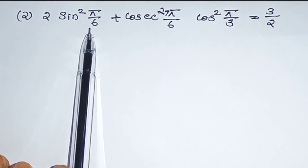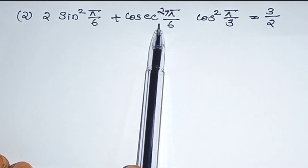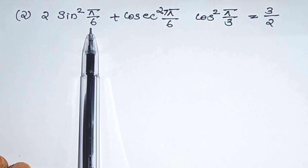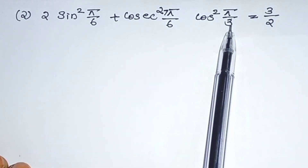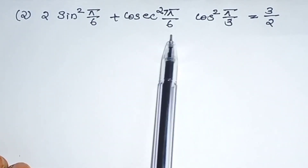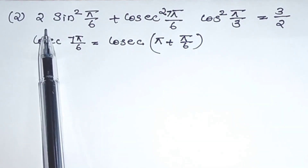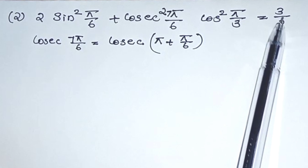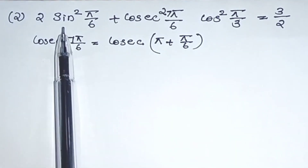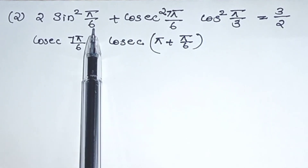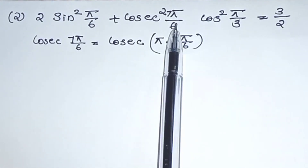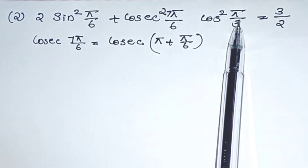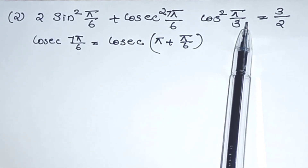Here, sin²(π/6) can be written as (sin(π/6))², cos²(7π/6) as (cos(7π/6))², and cos²(π/3) as (cos(π/3))². We know sin(π/6) equals 1/2 and cos(π/3) equals 1/2 directly. But we don't know cos(7π/6) directly, so we need to find it. LHS equals 2 sin²(π/6) plus cos²(7π/6) minus cos²(π/3).